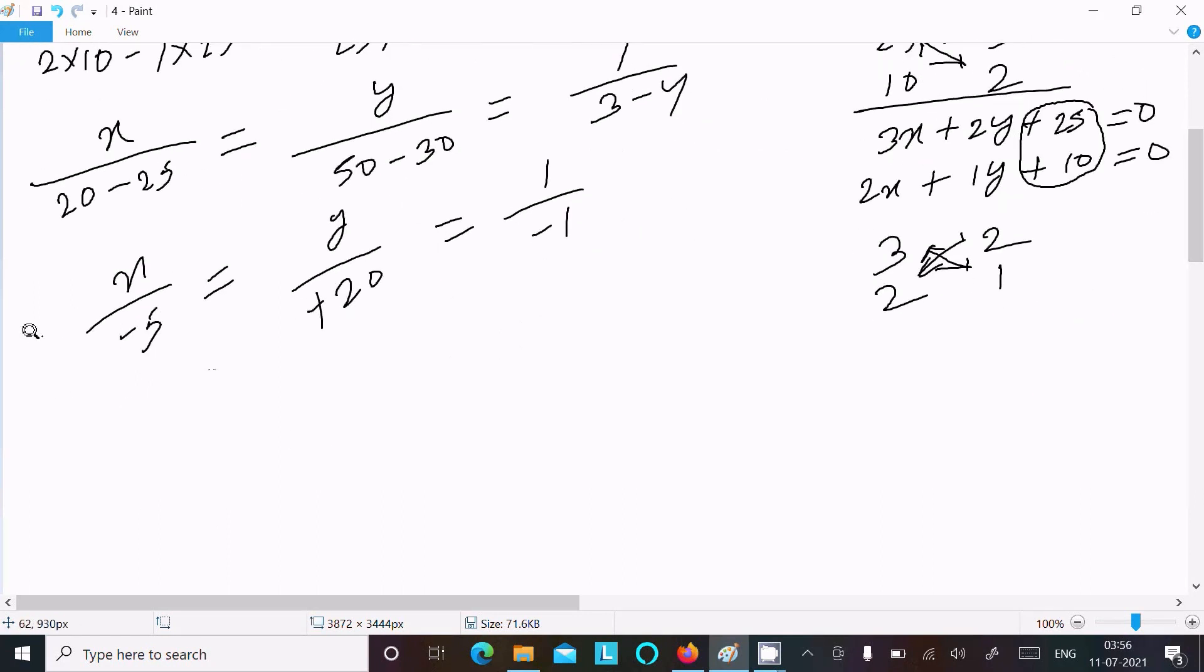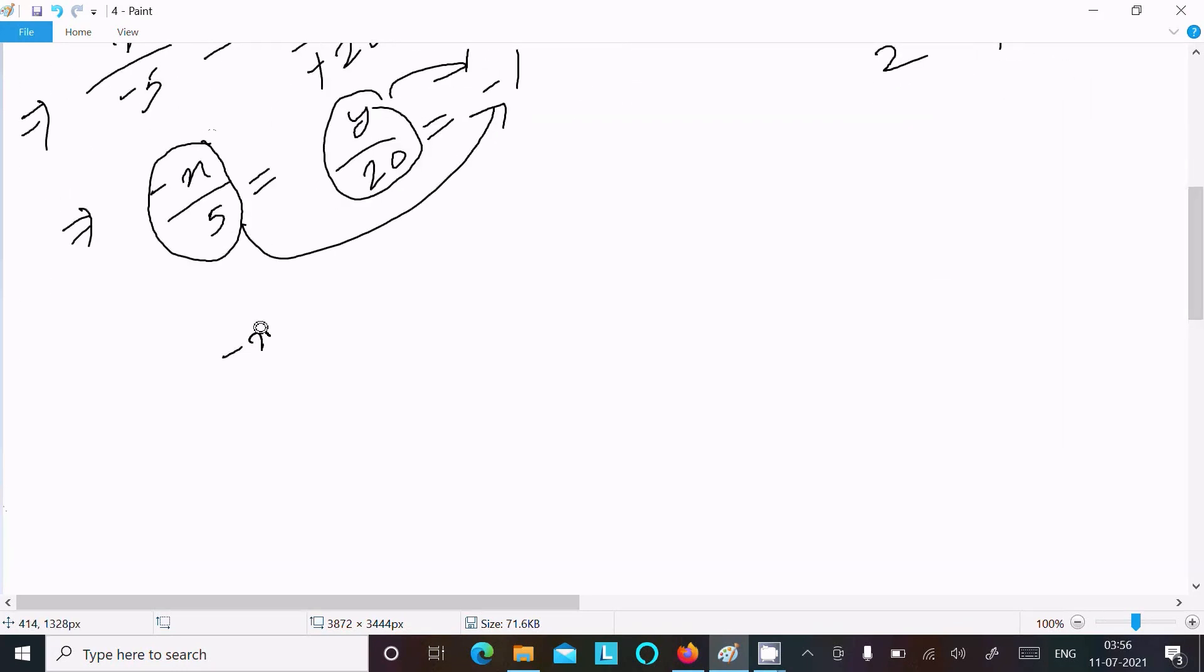Thereafter we can write minus x by 5, y by 20, and this is minus 1. Now equate with minus 1. We can write minus x divide by 5 equal to minus 1. Minus and minus cancel, 1 into 5, so x is 5.